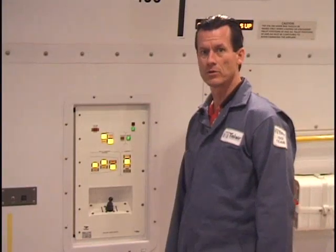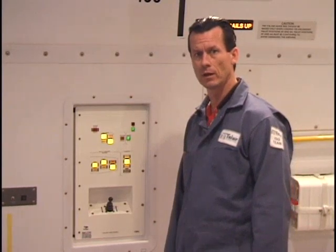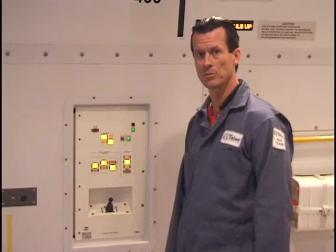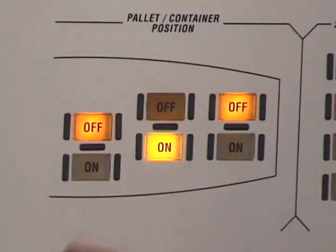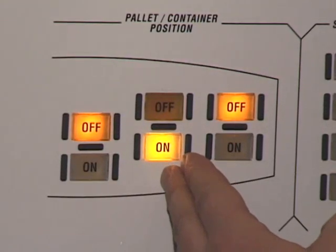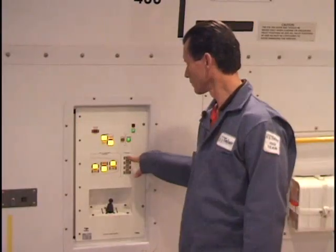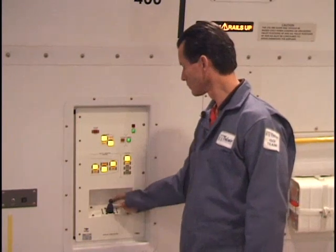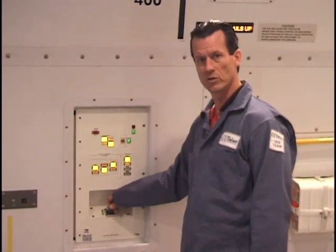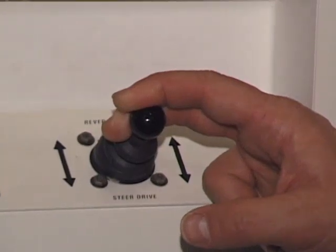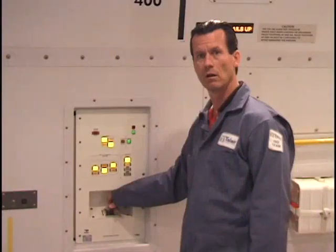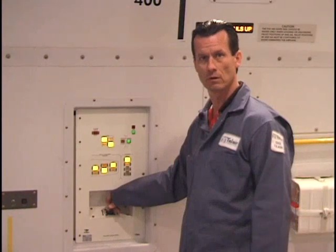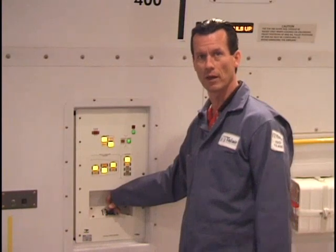Once pallet position 1A has been loaded, pallet P2A can now be loaded. This is accomplished by selecting on for the second position, selecting sequence 1, and activating the joystick in the steer drive position along with the steer drive switch on control panel 5R.